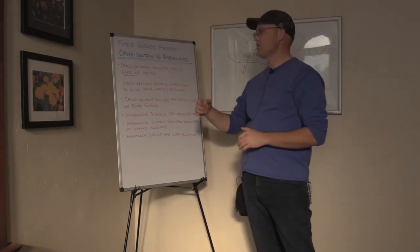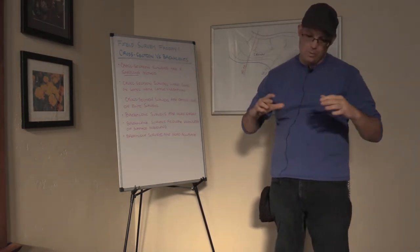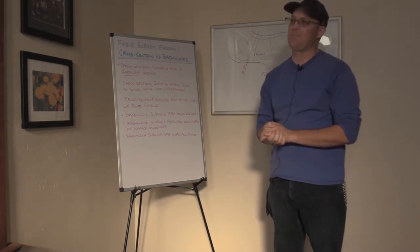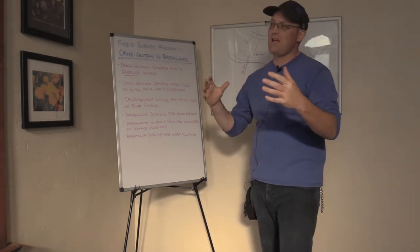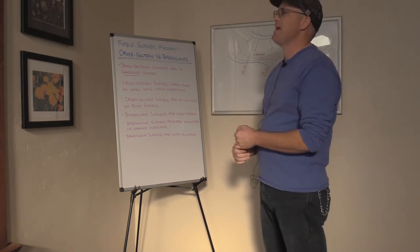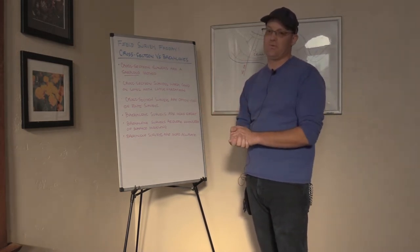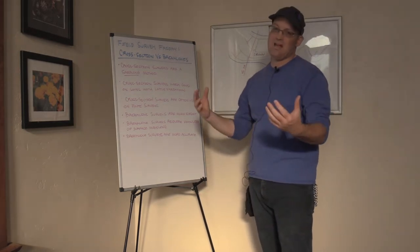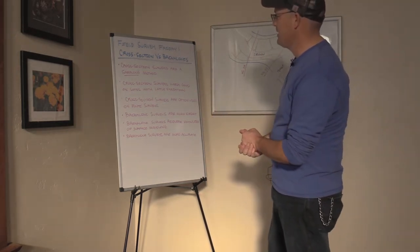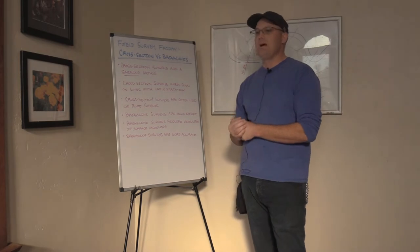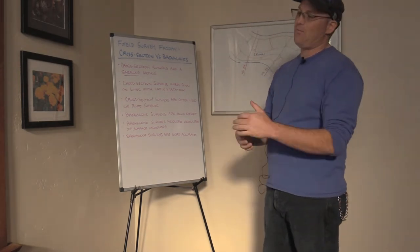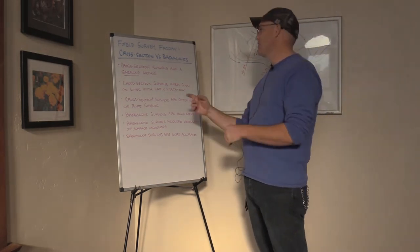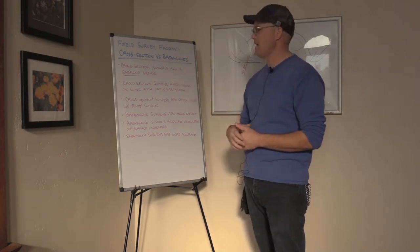So cross-section survey is what we call a sampling method. You're not surveying all the important features on the site, you're just taking a sample of those features. In fact, in some software, the cross-section line is actually called a sample line for that reason. So just remember, it's a sample of what's actually on the ground, it's not a comprehensive survey. So you're going to have gaps in your data.